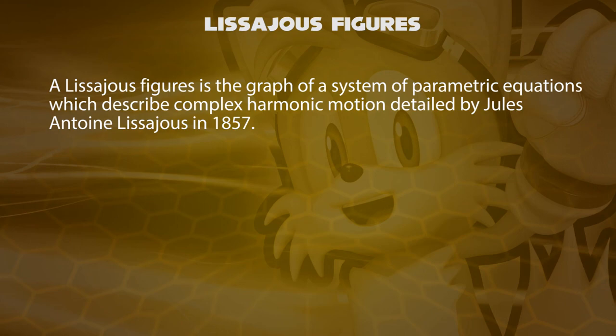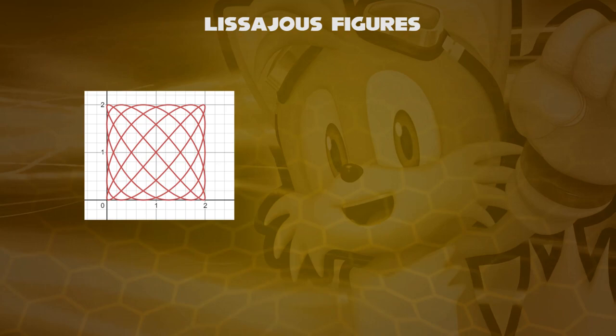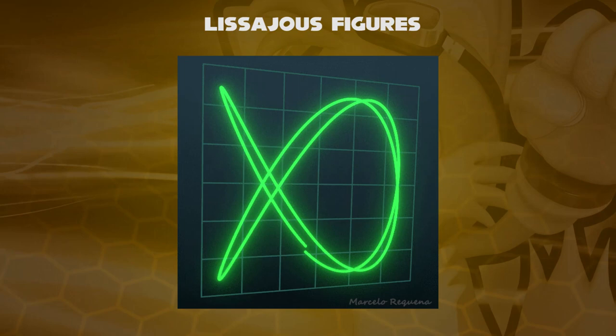Lissajous Figures is the graph of a system of parametric equations which describe harmonic motion, detailed by Jules Antoine Lissajous in 1857. Lissajous Figures are widely used in mathematical art concepts and in oscilloscopes. They are dependent on various frequencies and phase differences, including even and odd natural numbers.